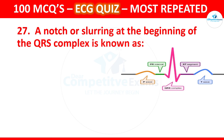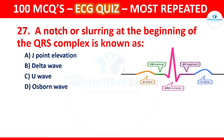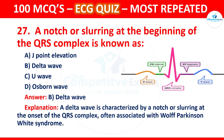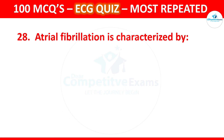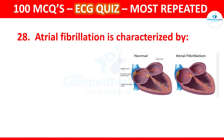Question 27: A notch or slurring at the beginning of the QRS complex is known as which of the following? Options are J point elevation, delta wave, U wave, or Osborne wave. The correct answer is delta wave. A delta wave is characterized by a notch or slurring at the onset of the QRS complex, often associated with Wolff-Parkinson-White syndrome.